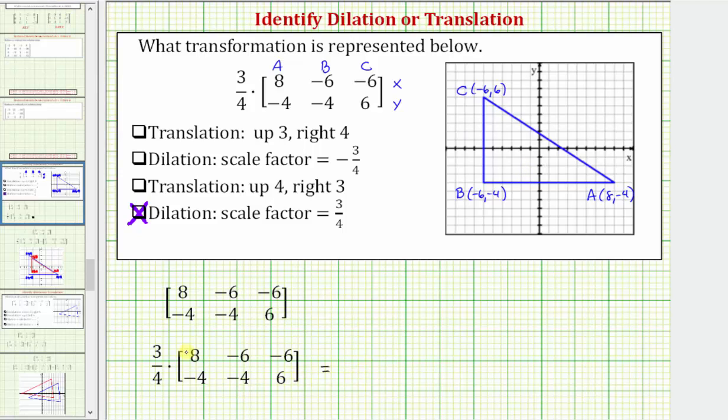Performing the scalar multiplication, we'd have three-fourths times eight, which equals six. Then we have three-fourths times negative six, which is negative nine-halves. And then we have three-fourths times negative six again. So these would be the x-coordinates of the dilation.